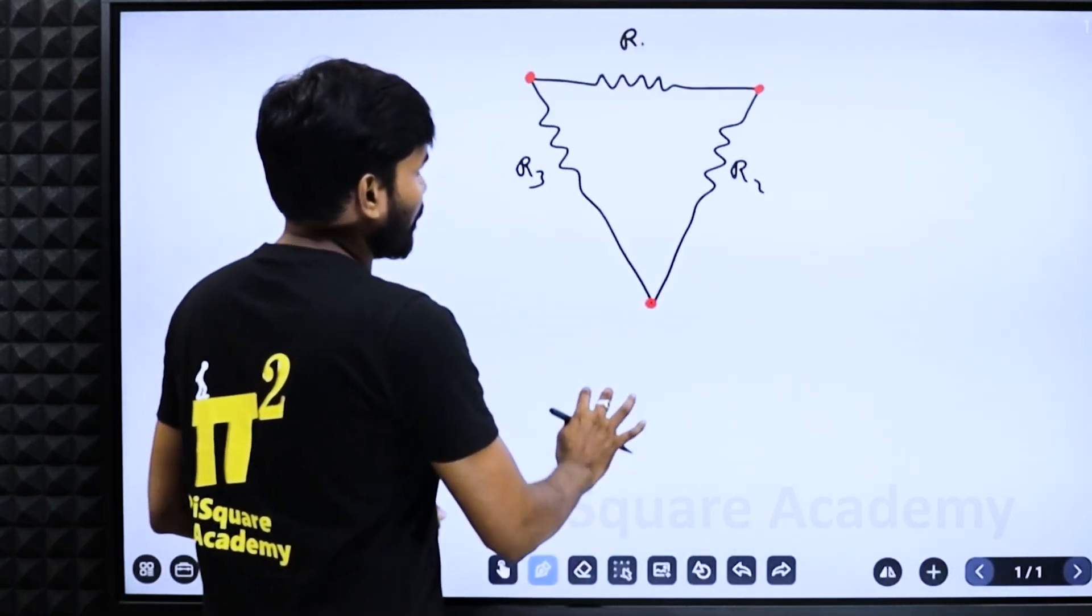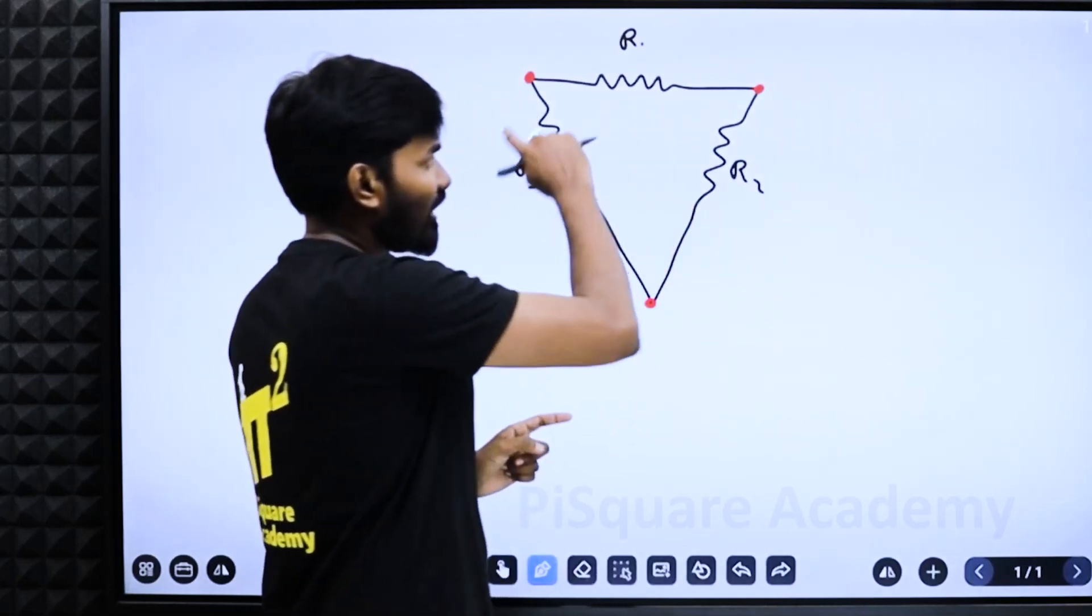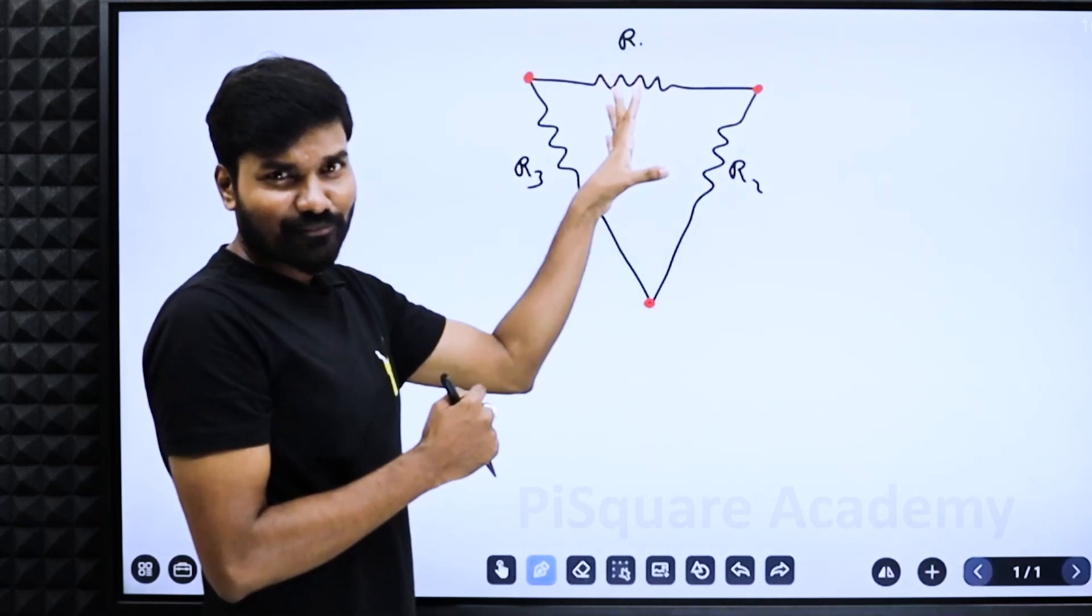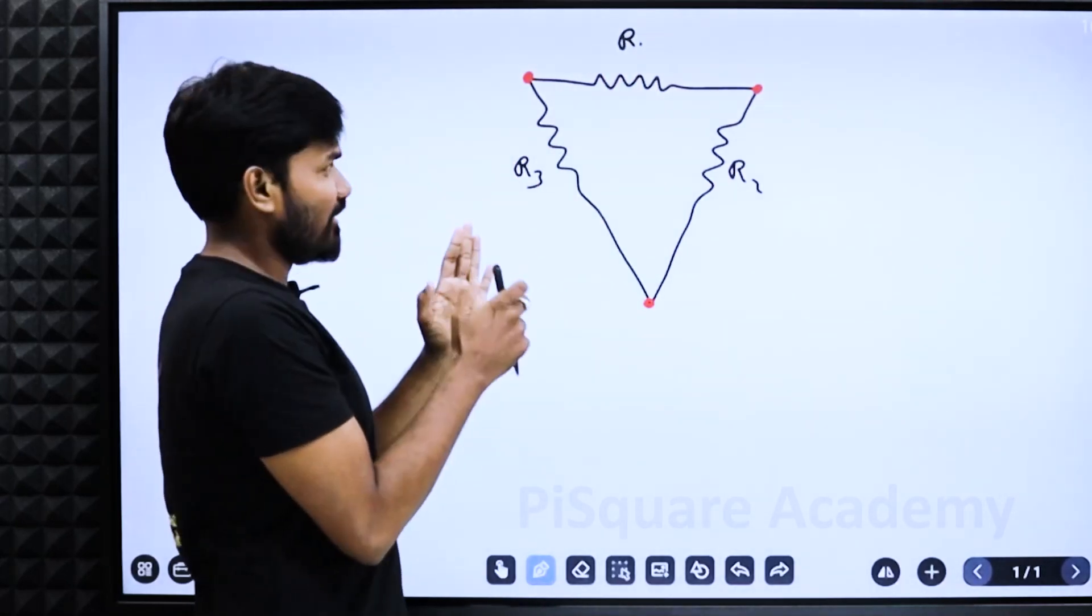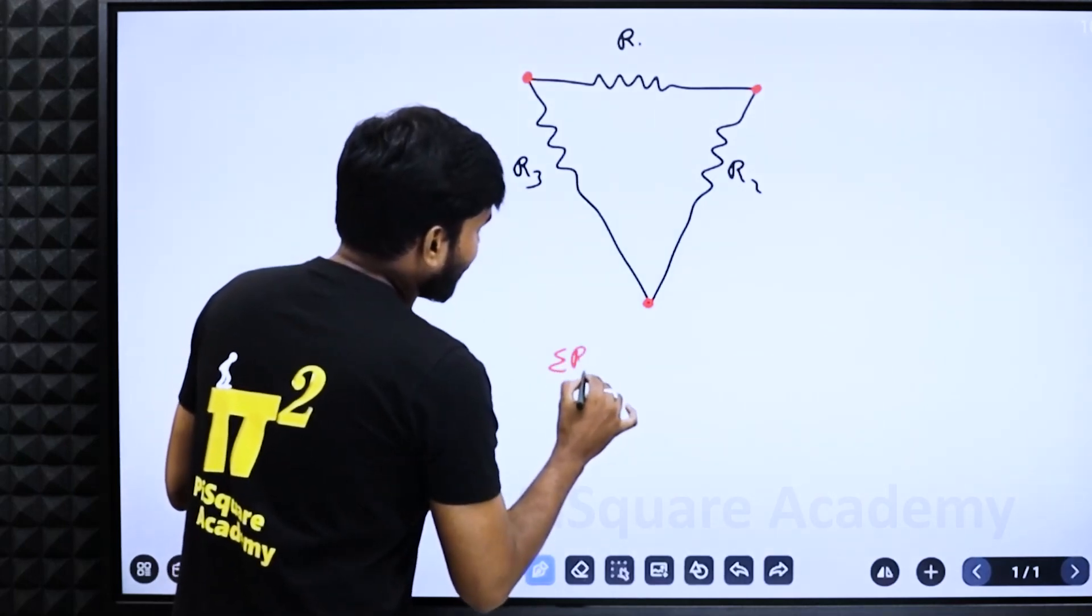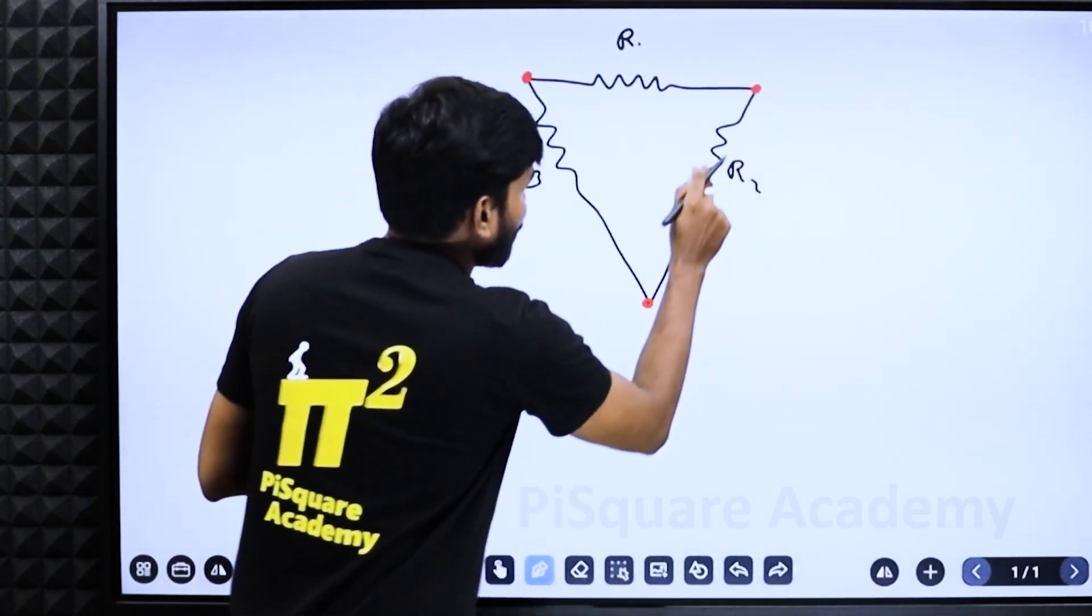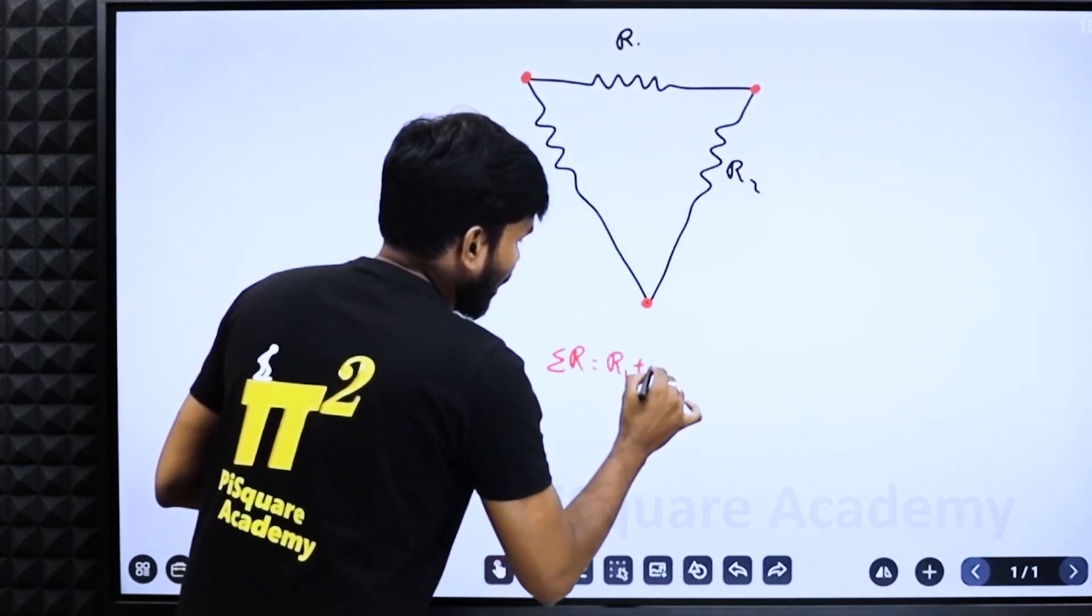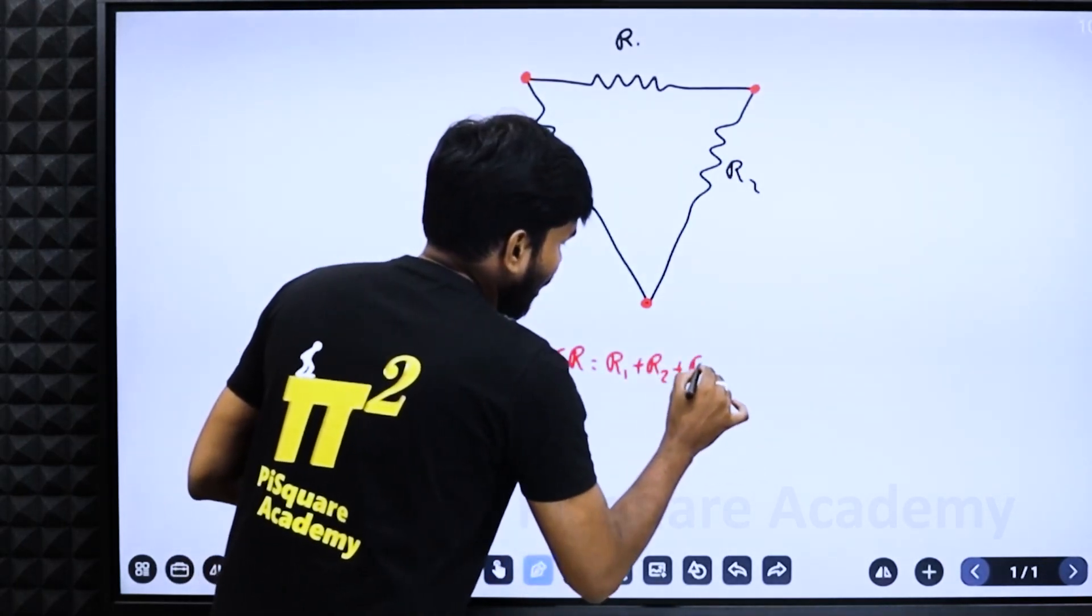Immediately we know delta is a closed connection, means they are appearing like they are in series. If you just look at the delta, just feel. So immediately write sum of all the resistances, add them all, close your connection. R1 plus R2 plus R3.